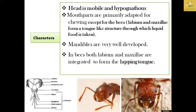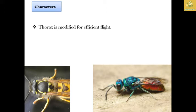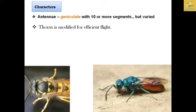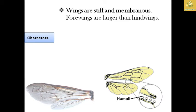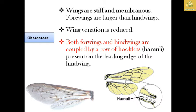The thorax is modified for efficient flight. The antennae are geniculate with 10 or more segments, though this can vary. The pronotum is collar-like, the mesothorax is enlarged, and the metathorax is small. Both the prothorax and metathorax are fused to form the mesothorax. The wings are stiff and membranous. The forewings are larger than the hind wings, and wing venation is reduced.